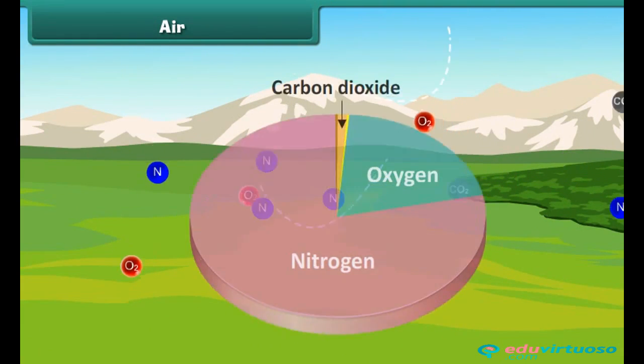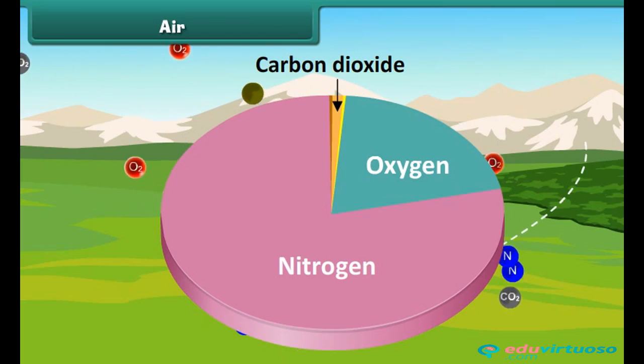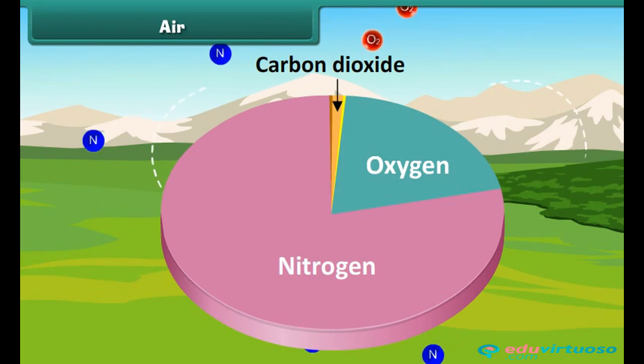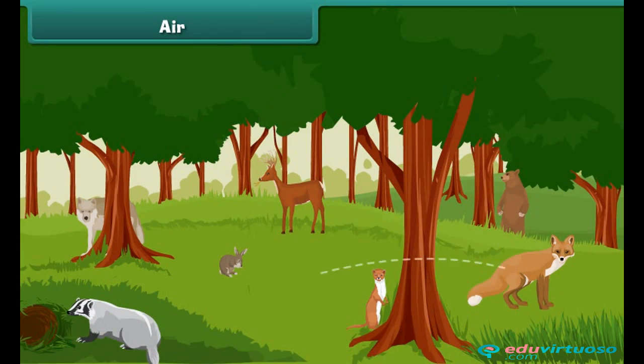Air is another important natural resource. Air is a mixture of gases. It consists mainly of nitrogen, oxygen, and carbon dioxide. Oxygen is essential for the survival of all living things.